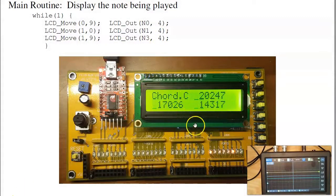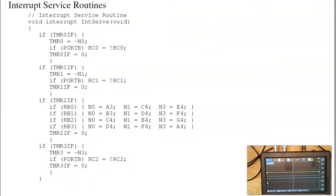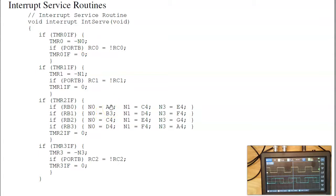So that's a chord — playing three notes at the same time. The significance of this program is I actually have five things going on at the same time: the main routine displaying what's happening, and each interrupt controlling a different pin, interrupting at a different frequency. The interrupts do not affect each other. I can have timer 0 running playing note A3, timer 1 playing note C4, and timer 3 playing note E4. They have no impact on each other whatsoever.